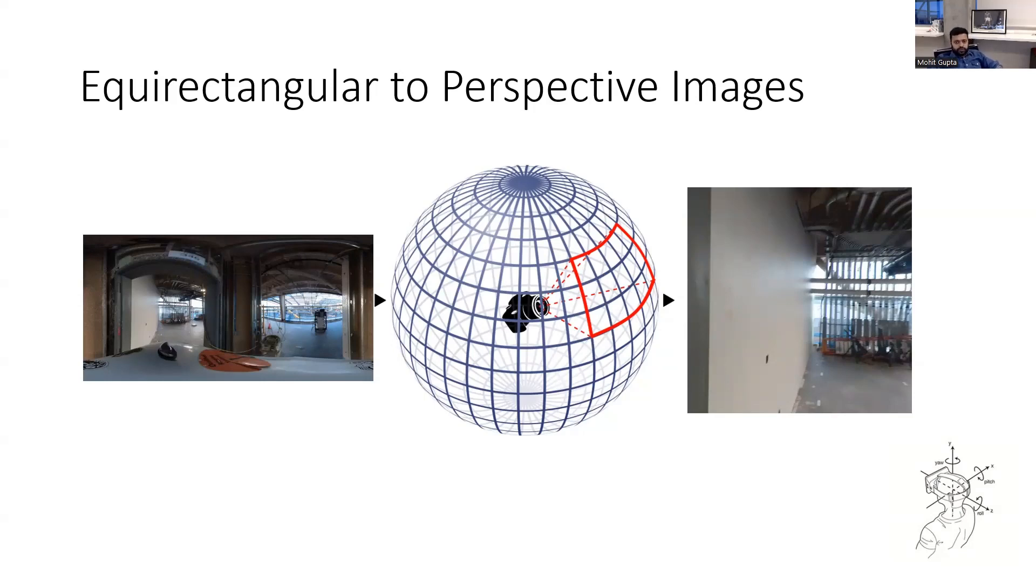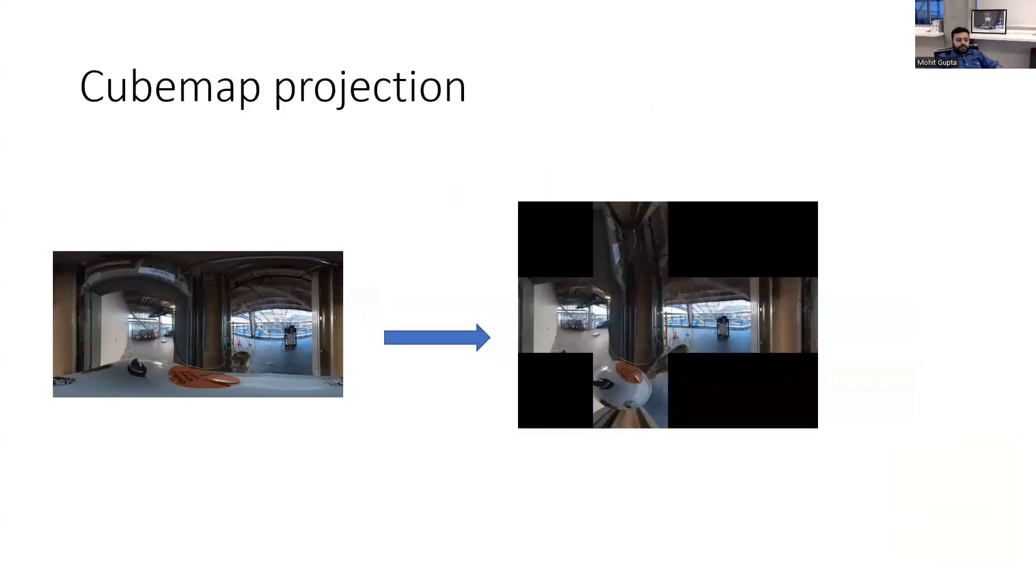Or you can use Python libraries, one is py360 or something like that. I'm not remembering the name, but if you go online and search equirectangular to perspective images, you will find some libraries. And another way of projecting these images is consider that this equirectangular image is wrapped around in a cuboid, around a cuboid. So now you're opening all the six faces of a cube or cuboid. So it's a cube map projection.